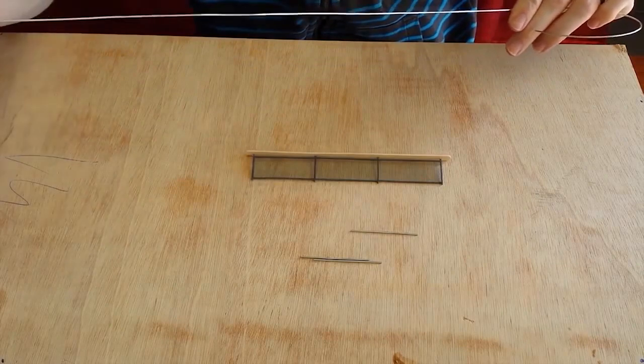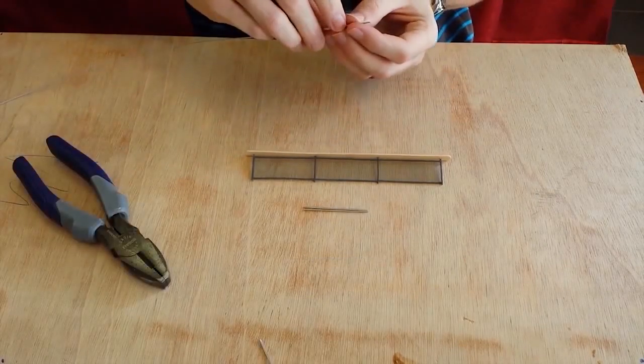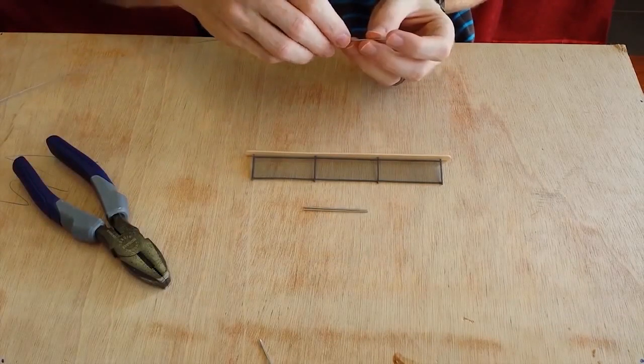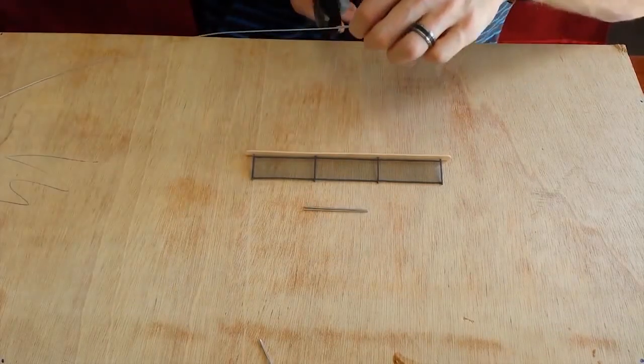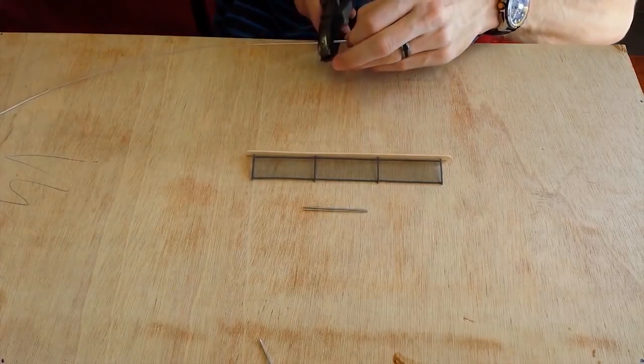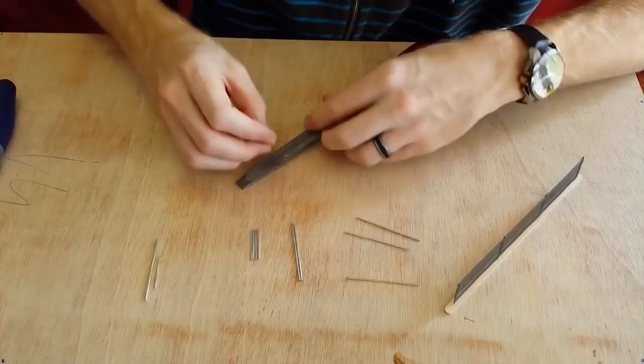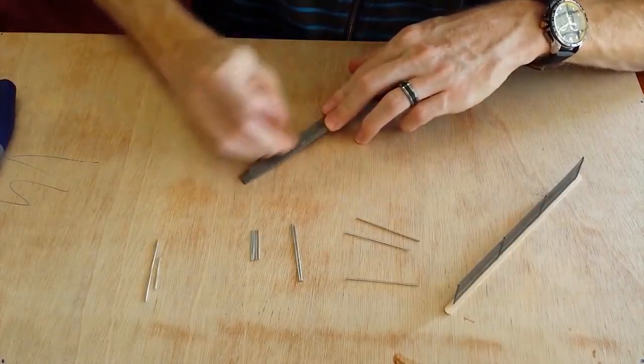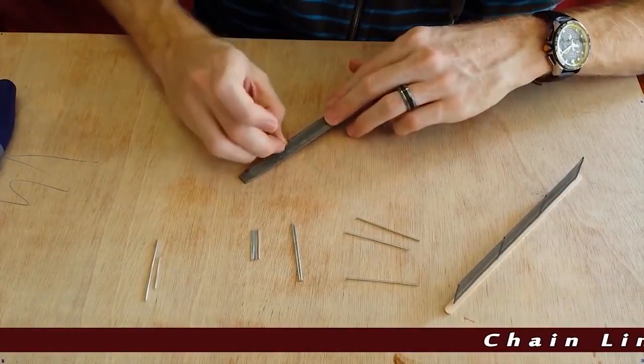Step one is to prepare the wire. Unfortunately the wire I got was all coiled up so I had to do my best to straighten it. I then cut small lengths depending on where it goes - the upright bars three centimeters long and the cross bars are five and a half centimeters long.